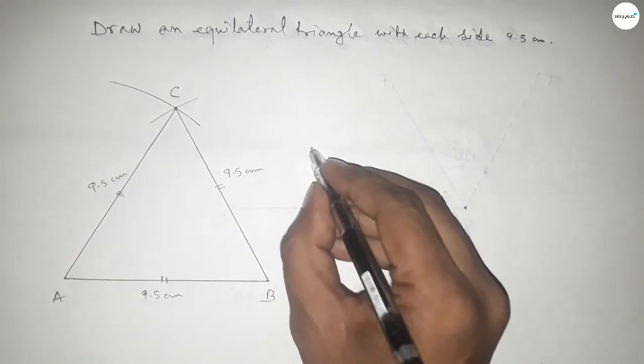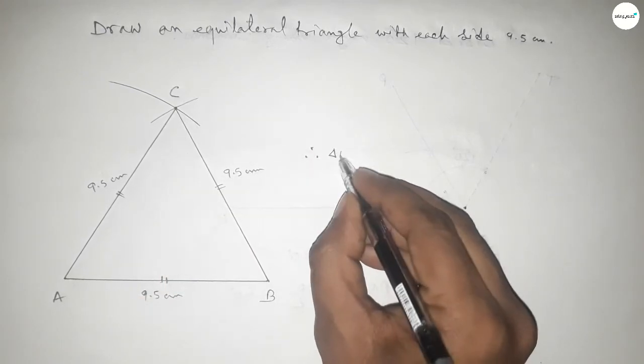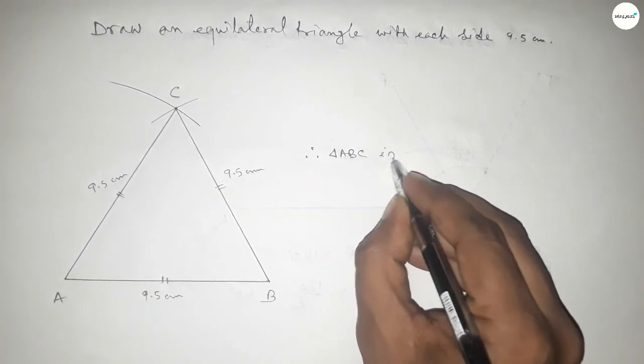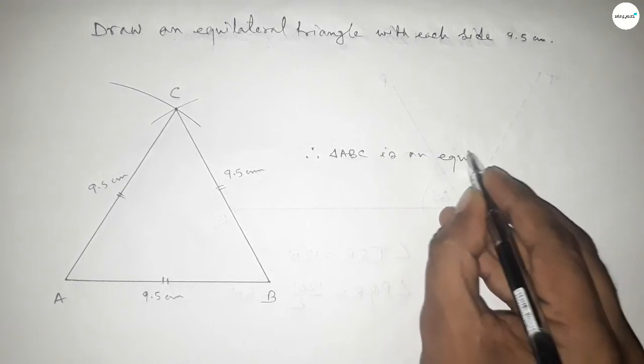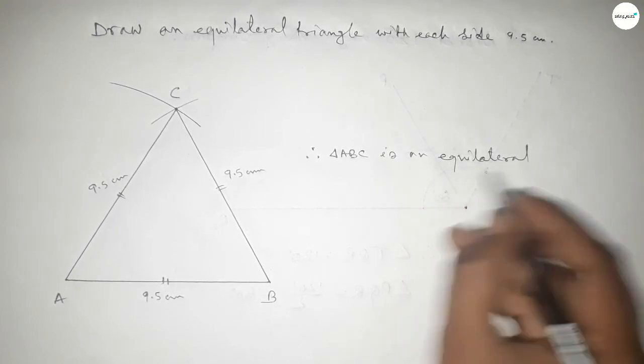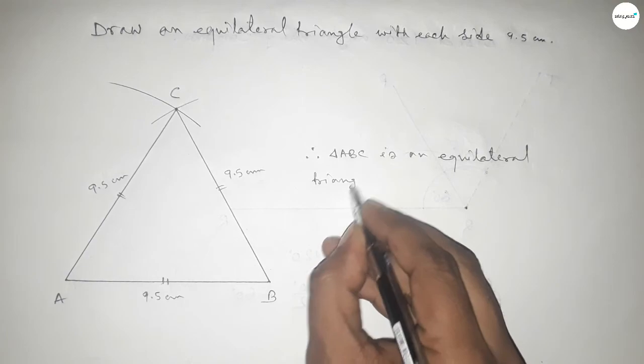Therefore triangle ABC is an equilateral triangle with each side 9.5 centimeter.